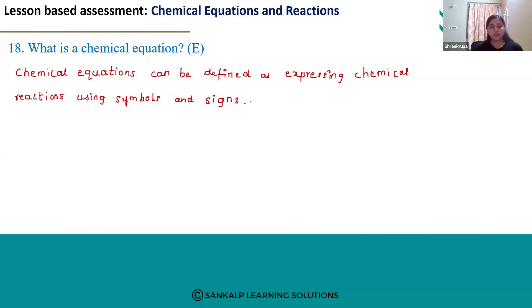So we define a chemical equation as expressing chemical reactions using chemical symbols. We use symbols, elemental symbols, and plus minus arrow marks to represent reactants and product side. This is how we define a chemical equation. Thank you.